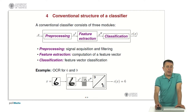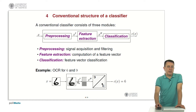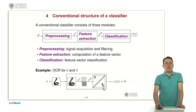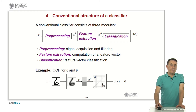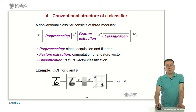Feature extraction computes a compact representation — a vector of measurements, typically real numbers, called the feature vector. For instance, we divide the image into an upper and a lower part and compute the average brightness on both parts. A six has a brighter upper part and darker lower part; a nine would be the opposite. In the feature space, the classifier assigns the feature vector to a class according to a decision rule — here, more brightness in the upper part means six, and in the lower part means nine.